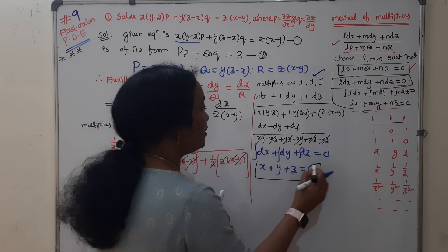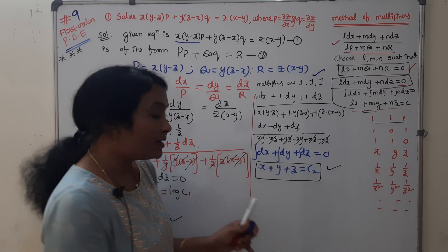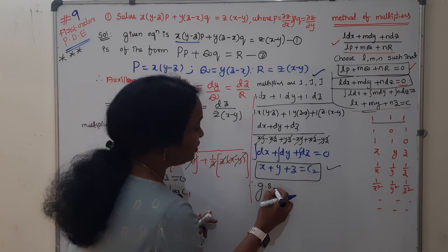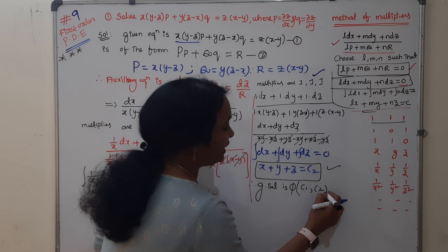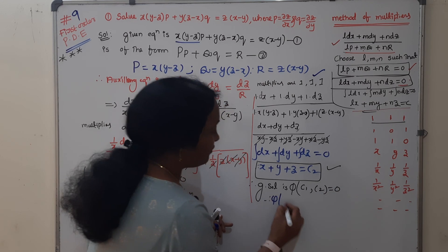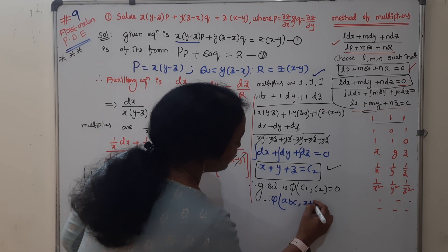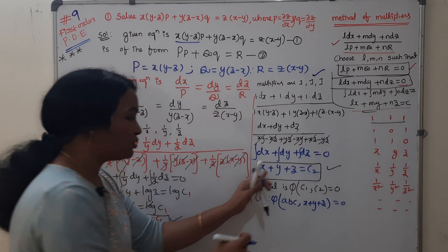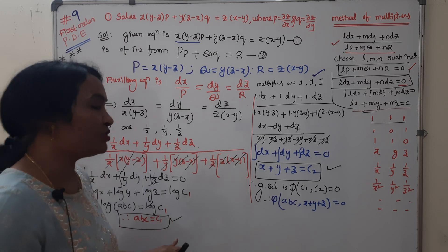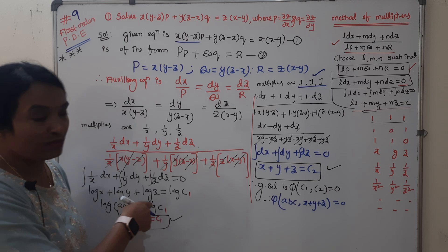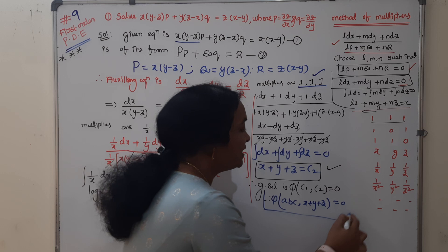This is the second solution: x + y + z = C2. Now we have two solutions: C1 = xyz and C2 = x + y + z. The general solution is F(C1, C2) = 0, that is F(xyz, x + y + z) = 0.